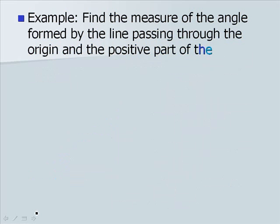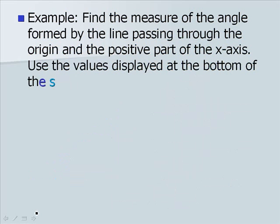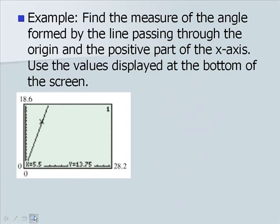Now, let's find the measure of the angle formed by the line passing through the origin and the positive part of the x-axis on a calculator screen. We'll use the values displayed at the bottom. We're going to use this triangle here. We end up with an angle, theta here. The value here would be our Y, which was 13.75 as we see at the bottom here. And here would be X, which is 5.5. This is our right triangle.